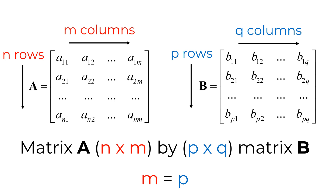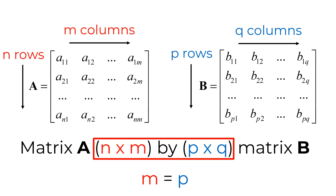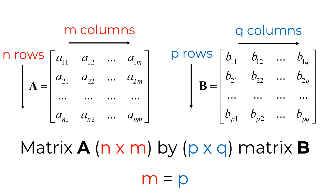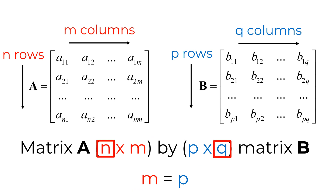Let me elaborate on how to check the matrix multiplication conformity. Consider an M by N matrix A and a P by Q matrix B. To check the conformity, you can lay out the four numbers for the size of matrices A and B in series — N, M, P, and Q. If the matrices A and B are conformable, N must be the same as P. The size of the resulting matrix is M by Q.